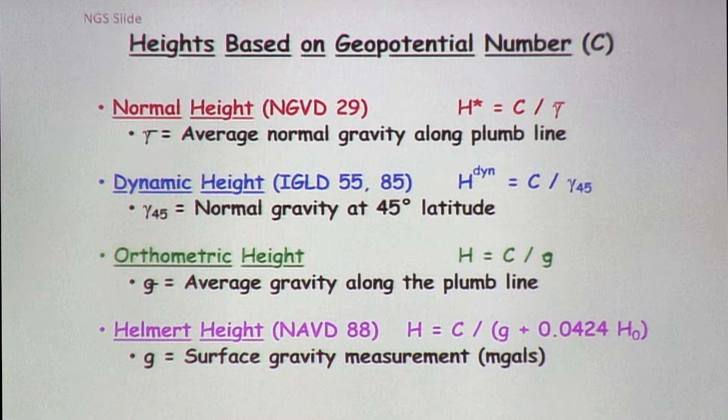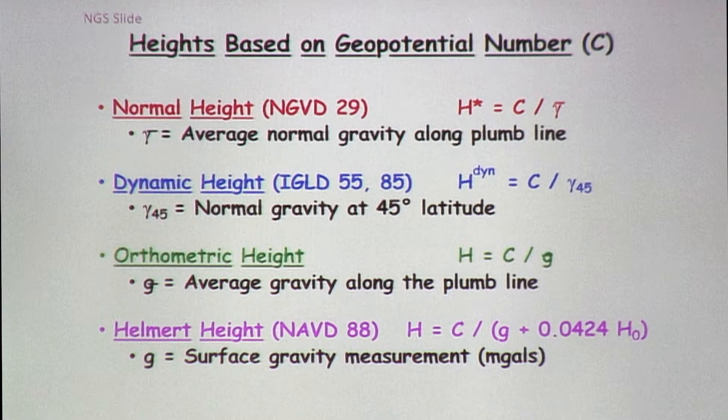You need an approximate elevation to do the Helmert orthometric height because what you're doing is saying: from where I think the geoid is up to this point, I need to compute this new gravity value. You don't need to know it very accurately, so that's why you do the first approximation. The gravity value in the equation is the surface gravity. What you're doing is taking the surface gravity and then using the average — that 0.0424 factor is based on an average density throughout. That's called a Helmert orthometric height because it uses the Helmert gravity formula.